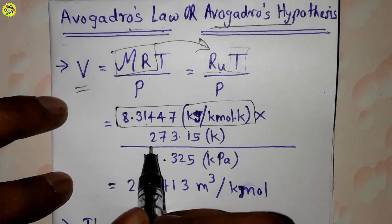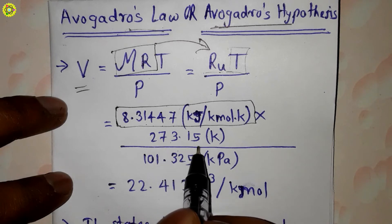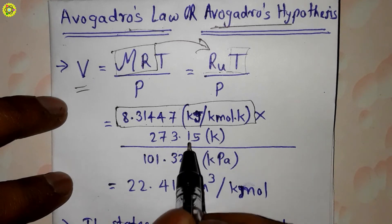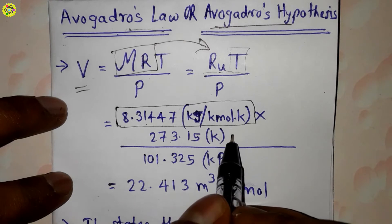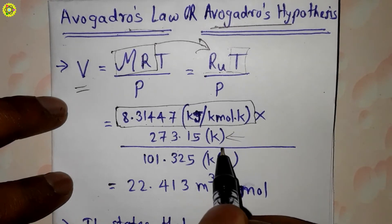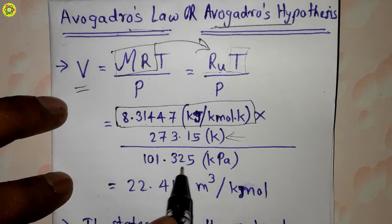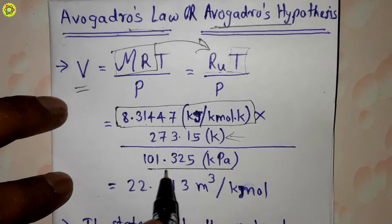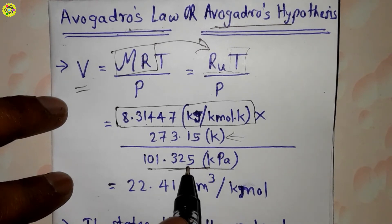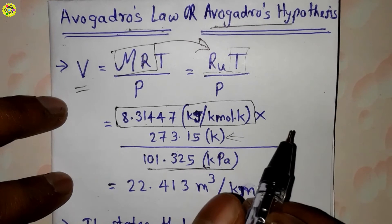we have taken as 273.15 kelvin, that is the NTP condition temperature, upon 101.325 kilopascal pressure, and this pressure is at standard atmospheric pressure.